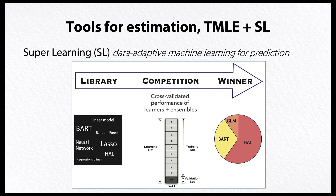Superlearning is a particular type of machine learning algorithm that relies on proven theoretical properties of cross-validation to data-adaptively select the optimal algorithm or combination of algorithms for predicting an outcome from available covariates or features in the dataset.